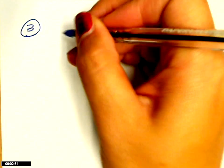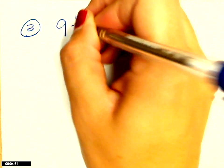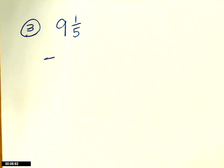Okay, we're going to try number three again. Number three is nine and one-fifth minus four and three-fourths.